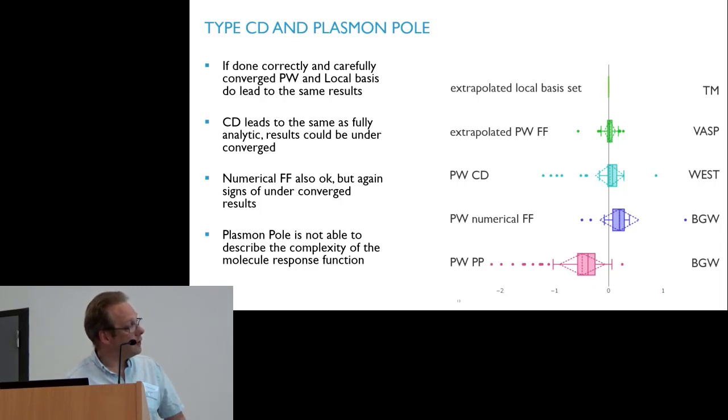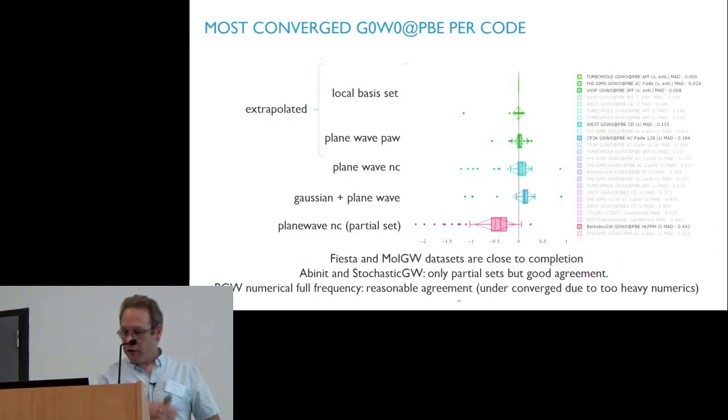And then you see another important thing to look at: that plasmon pole models do not work that well for molecules, especially this plasmon pole model. So after this we can now look at all the codes and see how well you can get. We have local orbital codes: AIMS very close, VASP gets very close, West gets very close. This is the CP2K results. That's actually a combination of Gaussians and plane waves. You see there could be still a little issue of basis set extrapolation. And this is again the BerkeleyGW. In the meanwhile also FIESTA and MolGW are running the code, the full set of results, so we will soon have them on the comparison side as well.